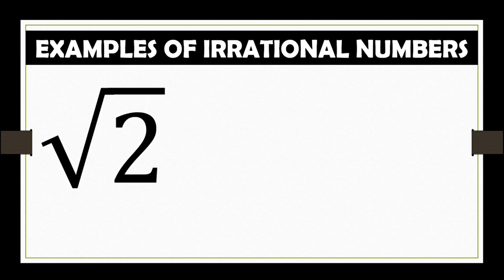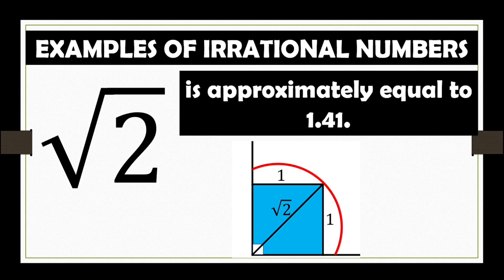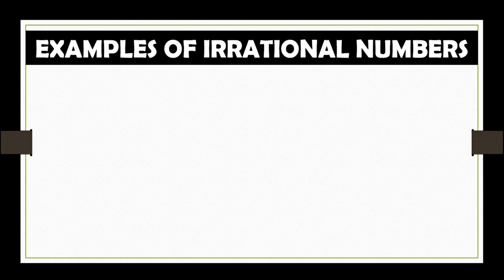Square root of 2. Geometrically, square root of 2 is the length of the hypotenuse of the isosceles right triangle whose legs are both one unit. It is approximately equal to 1.41.